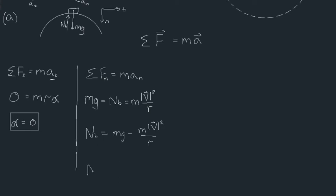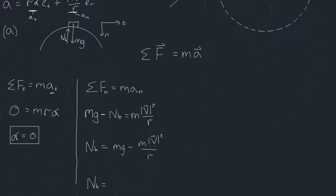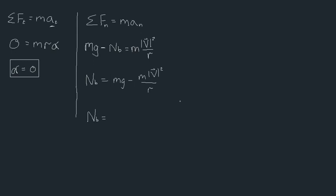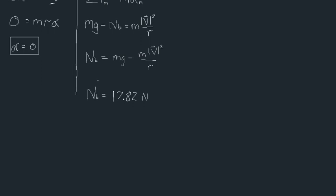Now we substitute values. Our mass is 2 kg, so: Nᴮ = 2×9.81 − 2×(3²)/10 = 2×9.81 − 2×9/10, which gives us 17.82 newtons. All values are in SI units so we're dealing with newtons. That's our answer for part A.